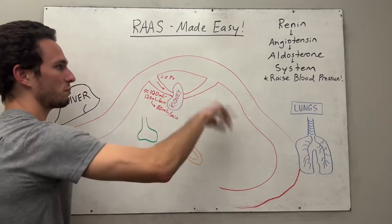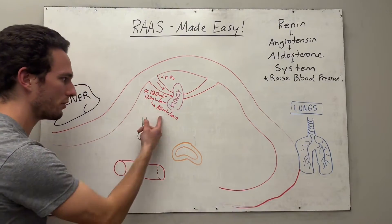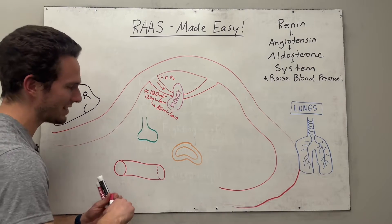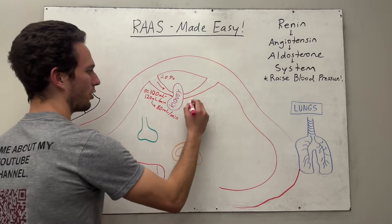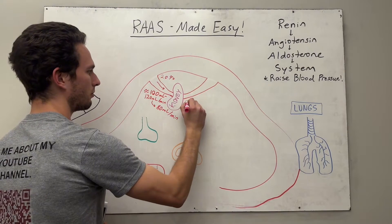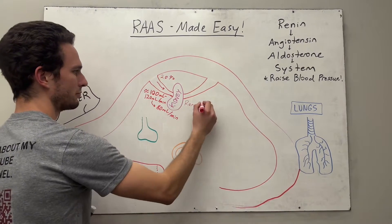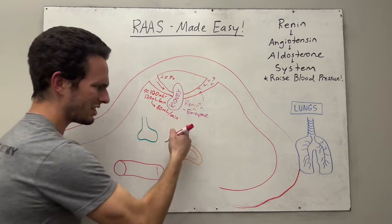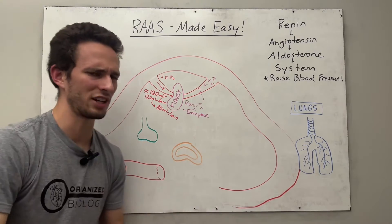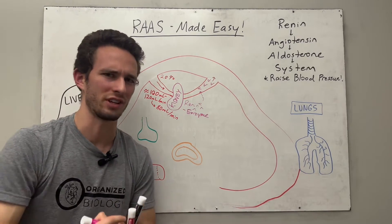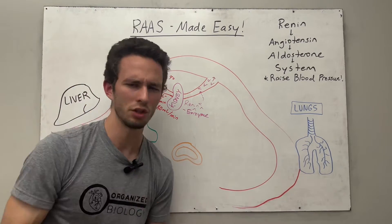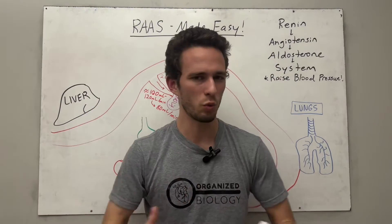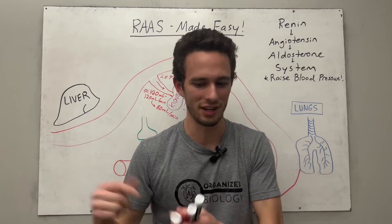So the kidneys, in response to that low filtration pressure, will release an enzyme called renin. This enzyme will hop into the bloodstream. And enzymes have to act on a specific substrate — the question is, what are we going to act on here?